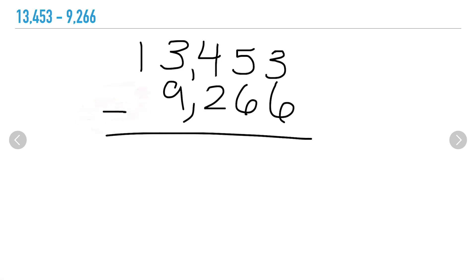Remember we're subtracting: 3 minus 6. I can't take away 6 from 3, so I need to regroup from my tens place. I'm borrowing one 10 from 5 tens, which means I have 4 tens left, and I can give that 10 over to my ones place. Now I have 13 ones minus 6.